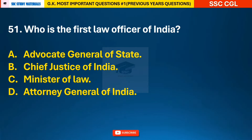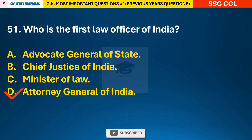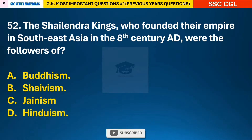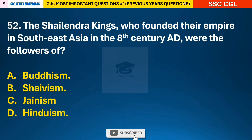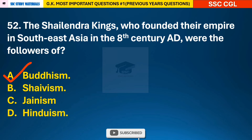Question 51: Who is the first law officer of India? — answer D: the Attorney General of India is the first law officer of India. Question 52: The Sailendra kings who founded their empire in Southeast Asia in the 8th century AD were the followers of — answer A: Buddhism.